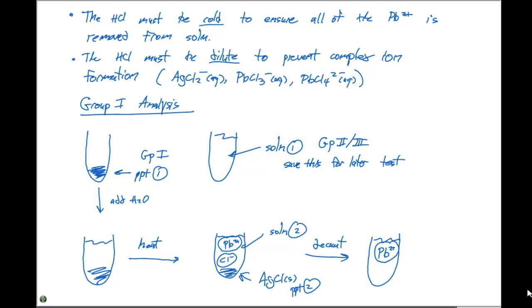So in our test tube right now, we have lead two plus ions and Cl minus ions. At this point, the only cation we want in solution is lead two plus. And this is an effective way to separate all these out.